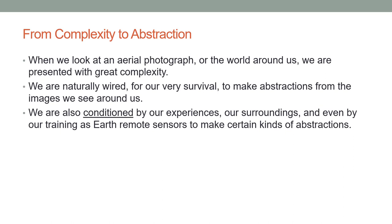How does our brain go from complexity to abstraction — abstraction being the meaningful objects we perceive in a high spatial resolution image? When we look at an aerial photograph or the world around us, we are presented with great complexity and are naturally wired to make abstractions for our very survival. We are constantly classifying imagery coming into our senses, conditioned by our experiences, surroundings, and training as Earth remote sensors to make certain kinds of abstractions.